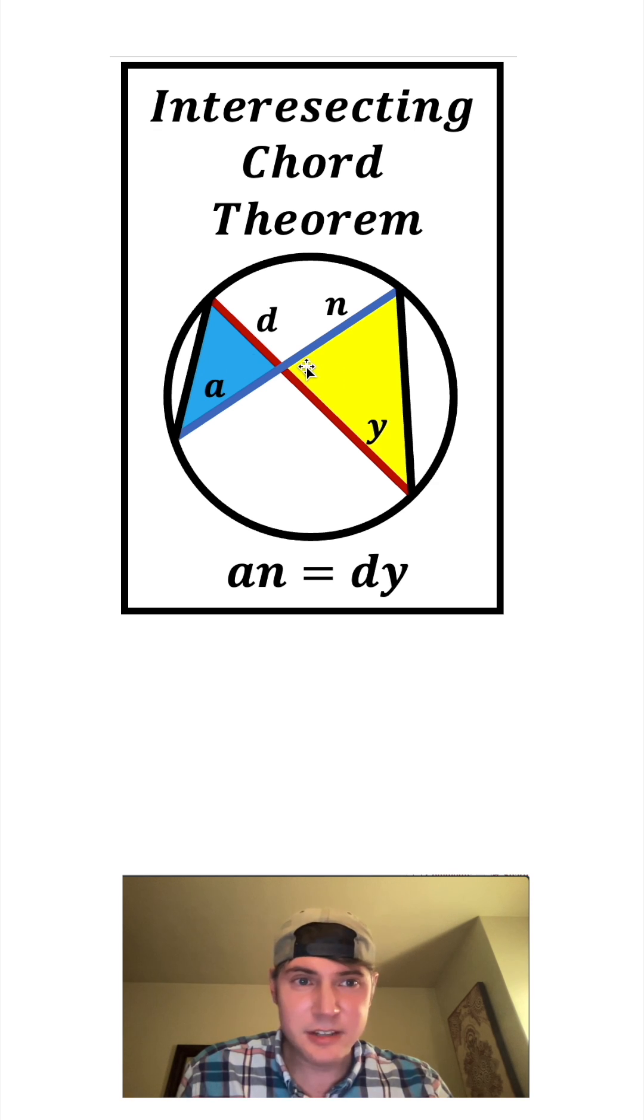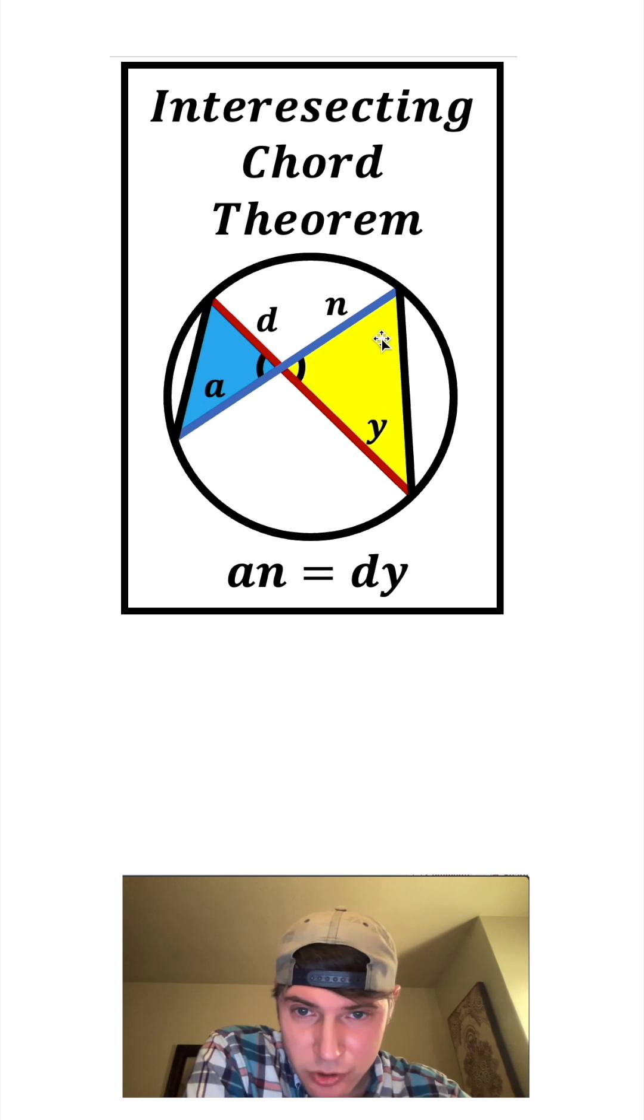This angle of the blue triangle and this angle of the yellow triangle are going to be congruent to each other because they're vertical angles. Anytime you have two straight lines meeting like this, they form two congruent angles.